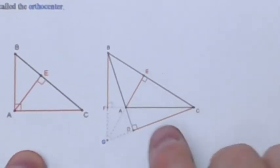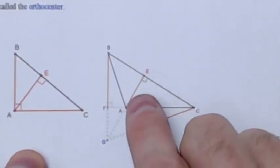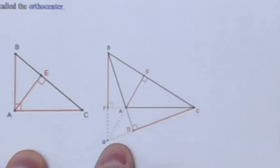And then here, the triangle's obtuse, and you'll see that the orthocenter morphed into the outside. It's not inside the triangle anymore.